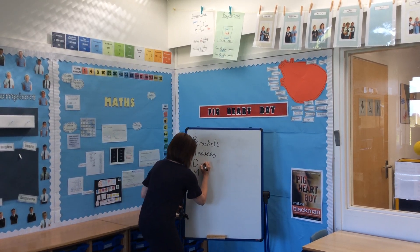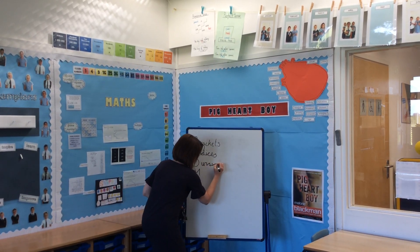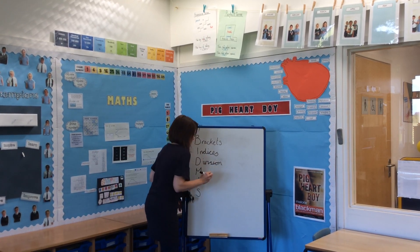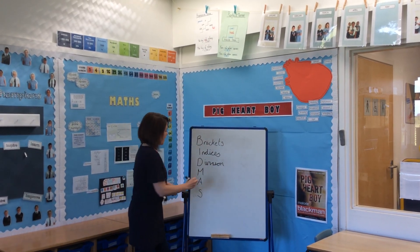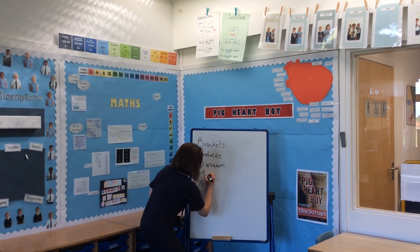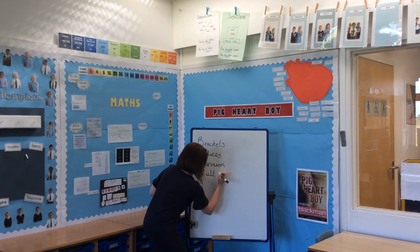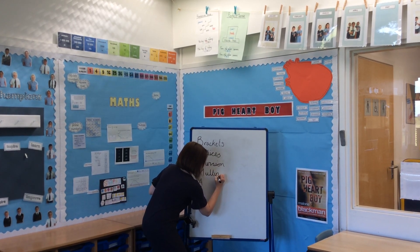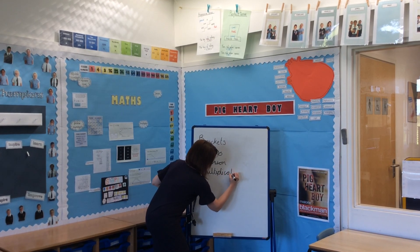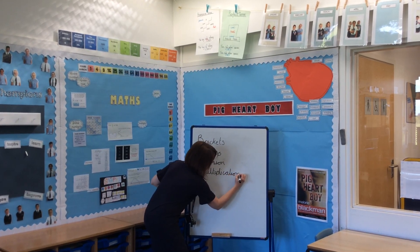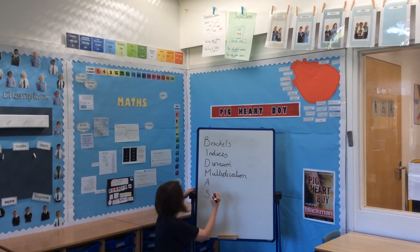Next is D for division — the third step would be to complete any division calculations. And also at that stage we have multiplication. It's been a long time since it was written on a whiteboard! Following that we've got addition.